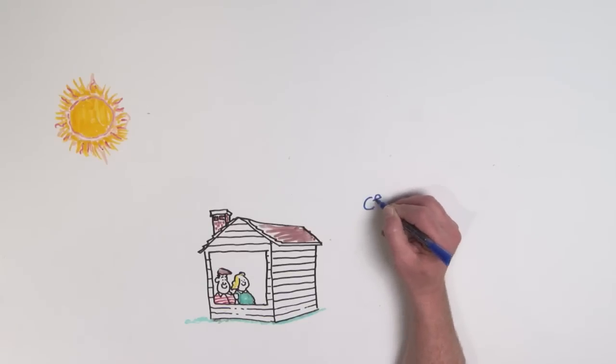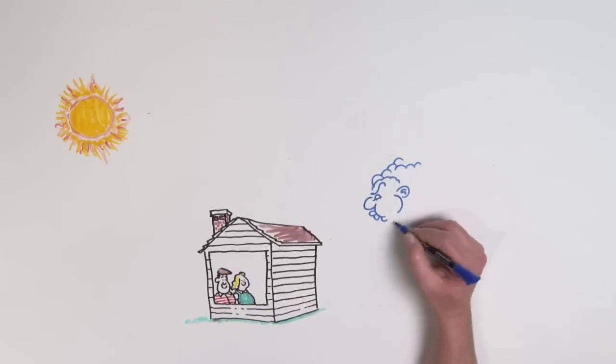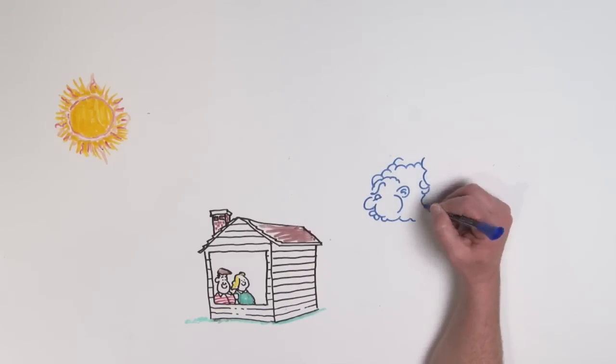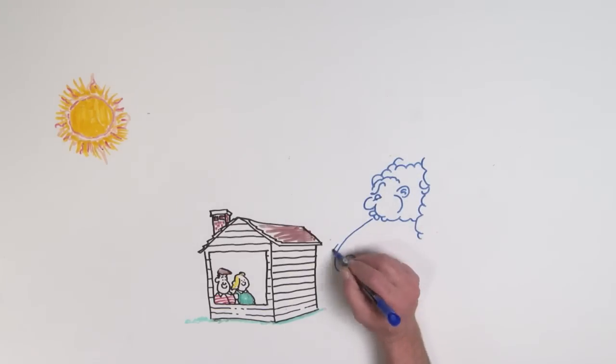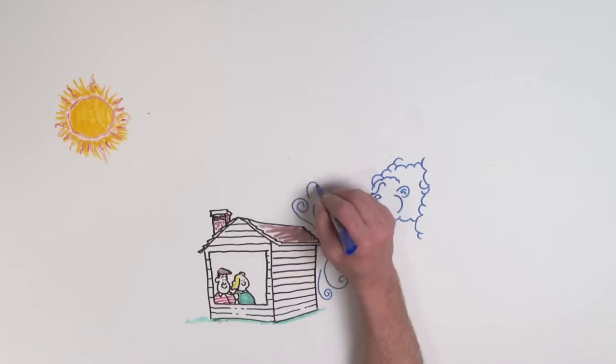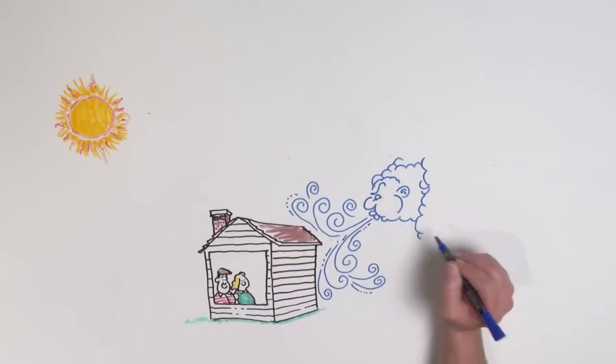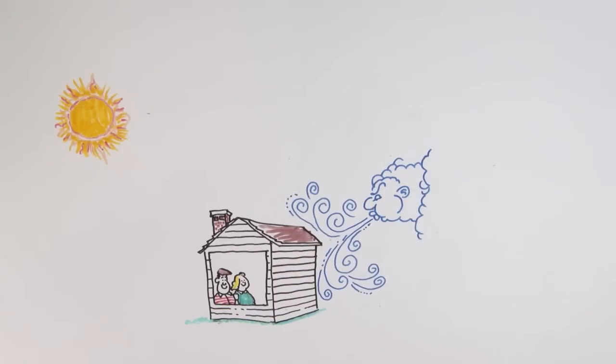Certified vinyl siding is manufactured and verified to meet or exceed the longstanding accepted industry standard for quality. In other words, it will withstand a wide range of environmental conditions, from 110 mph wind pressures to the hottest day of the hottest summer.